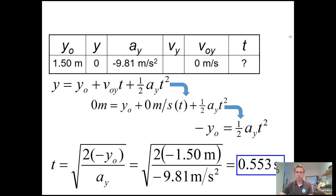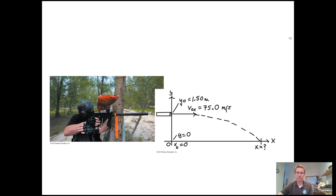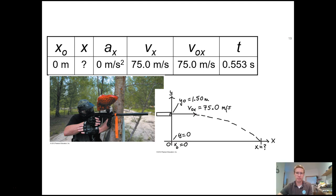We've solved Part A and can now move on to Part B. To solve for how far away the paintball lands, we need to work in the x direction, since we're asked for the x distance.